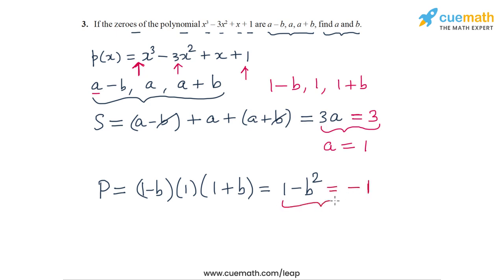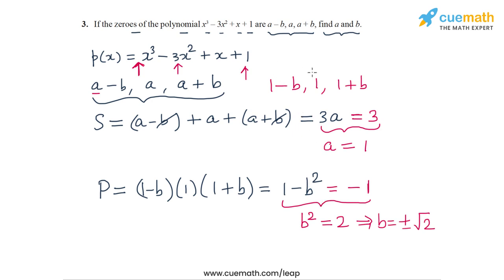So 1 - b² = -1, which means b² = 2, and therefore b = ±√2. Which value should we choose — plus √2 or minus √2? For b = +√2, the three zeros are 1-√2, 1, and 1+√2.